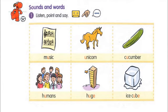Page 14. Sounds and words. Number 1. Listen, point, and say. U — music. U — humans. U — unicorn. U — huge. U, U — cucumber. U, U — ice cube.